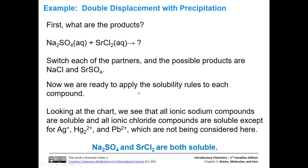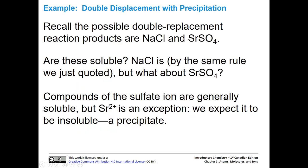Let's apply the solubility rules to each compound. Looking at sodium chloride first: sodium cations are all soluble. For chloride, all ionic chloride compounds are soluble unless they're with silver, mercury, or lead. Strontium chloride and sodium sulfate are both soluble - and as we saw these in our reactants, both being aqueous means they're dissolved in solution. Now for the possible products - sodium chloride and strontium sulfate - sodium cations are always soluble, and chloride is soluble unless with silver, mercury, or lead. So sodium chloride is soluble.